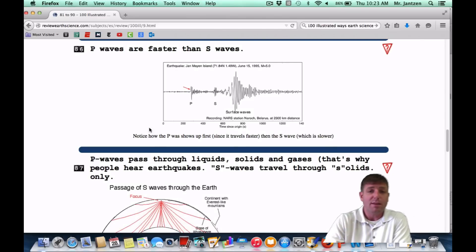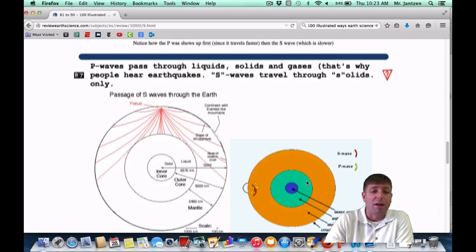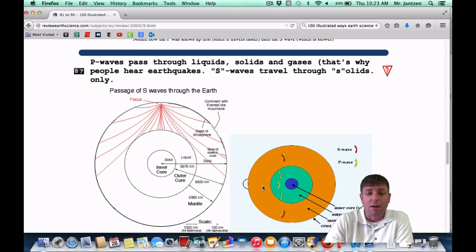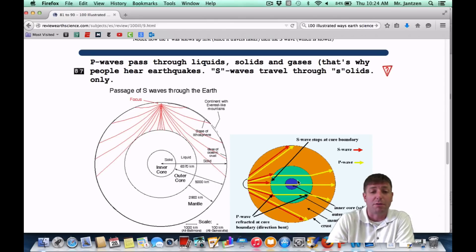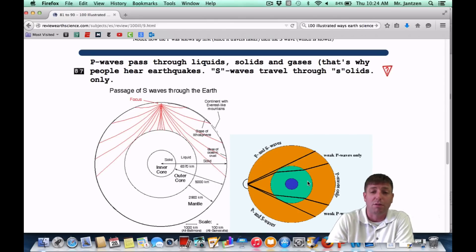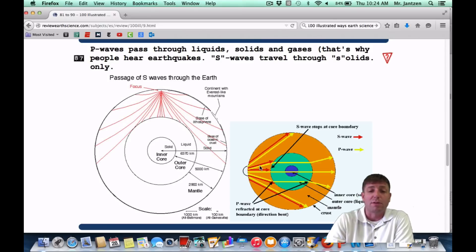Number 87: P waves pass through liquids, solids, and gases. That's why people hear earthquakes. S waves travel through solids only. S solids, S solids. So P waves are going to travel through anything. S waves are actually only going to travel through the solid. So here's an example of an earthquake happening. Then the yellow is representing the P waves going through just about any material. Now, the going of different materials are actually going to change directions. So they're actually going to cause different shadow zones on the opposite side of the earth. There's the P wave shadow zone and the S wave shadow zone. So depending upon where your seismograph station is, an earthquake could occur and you may not get any readings.